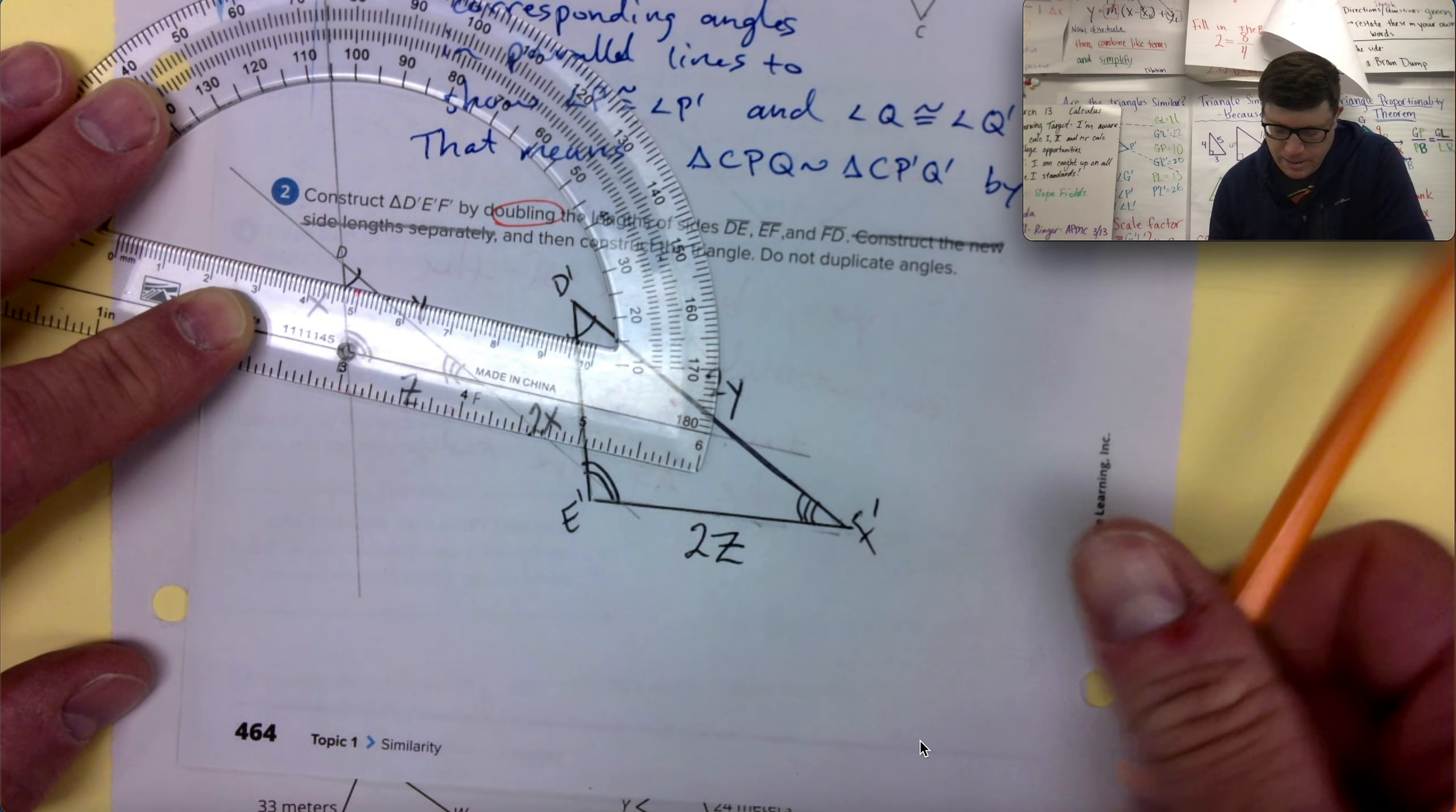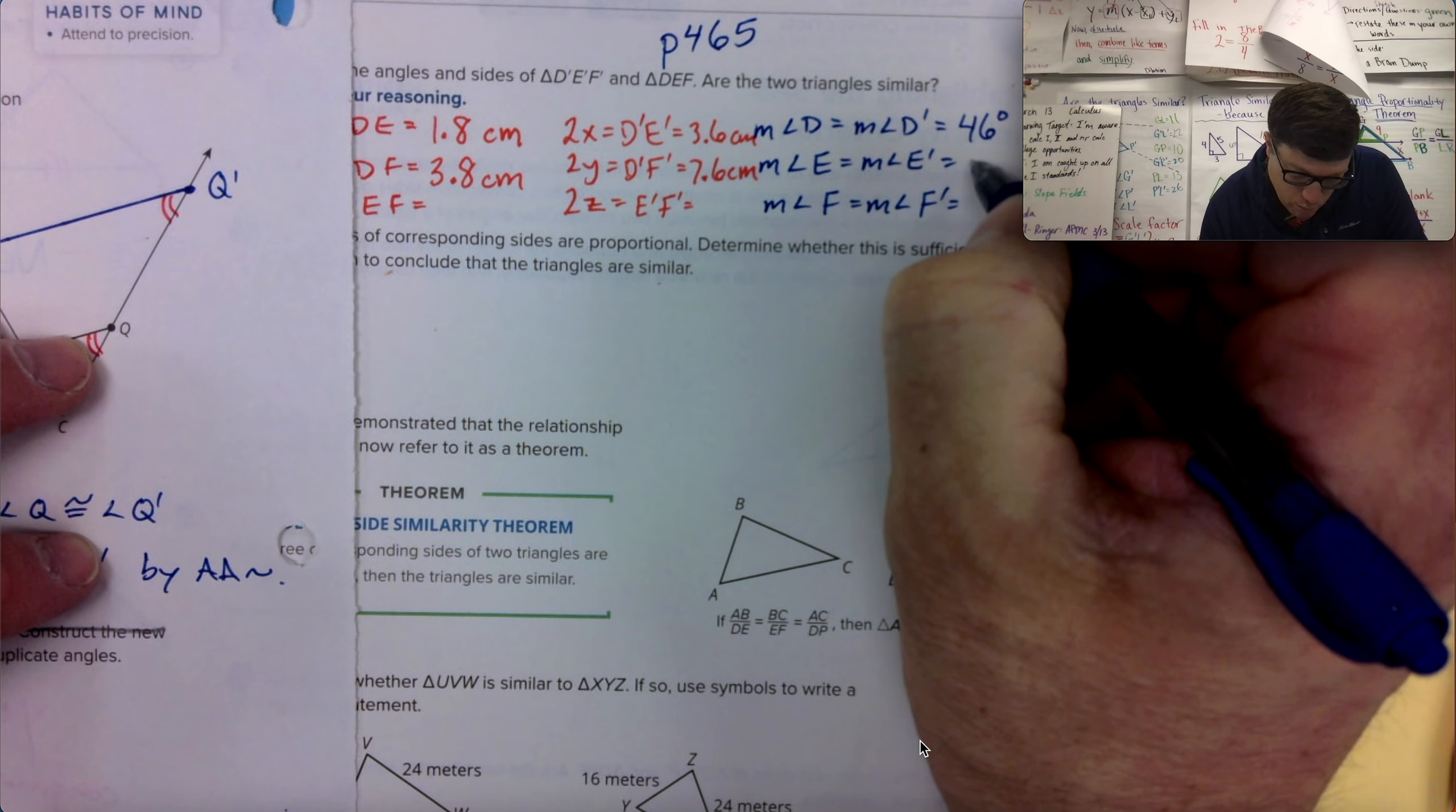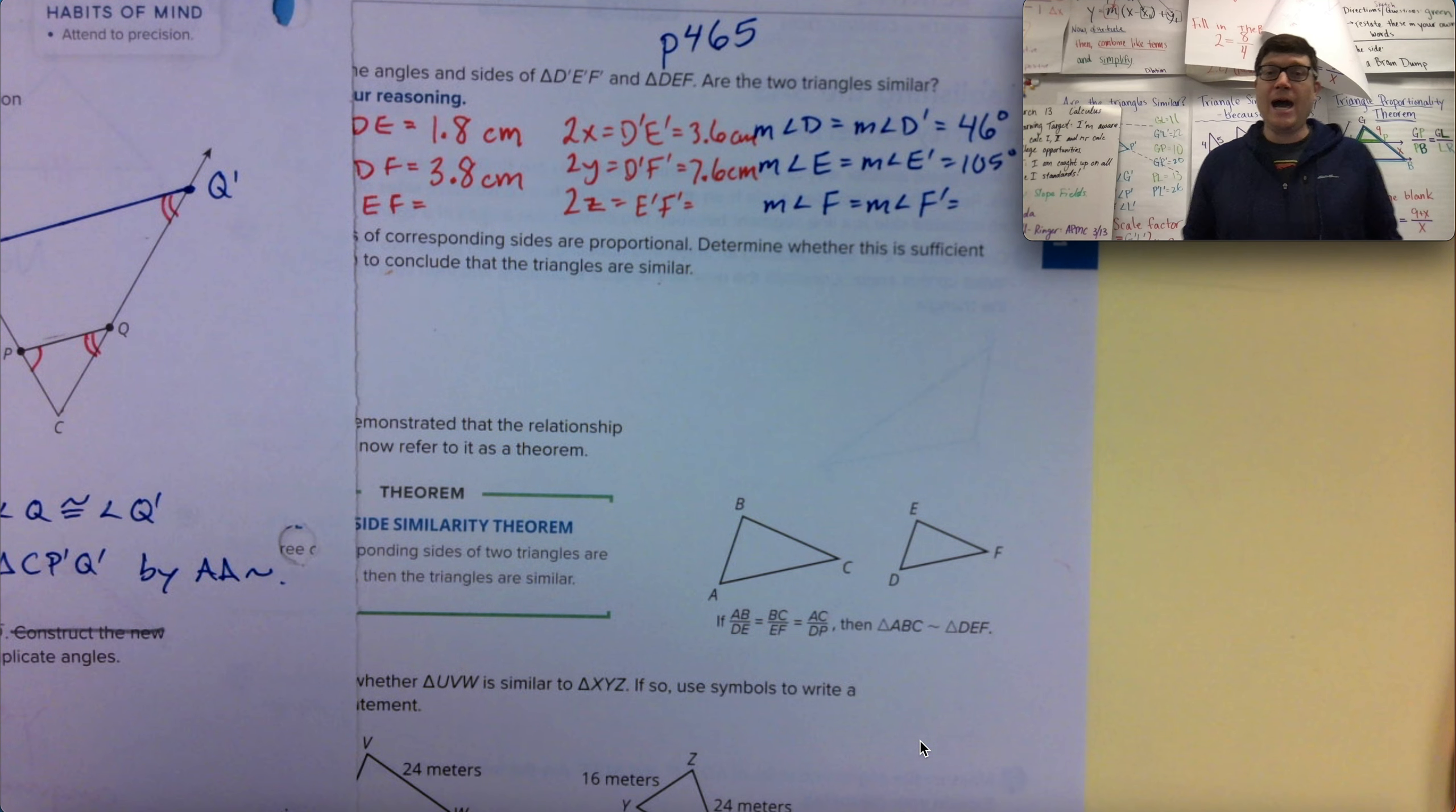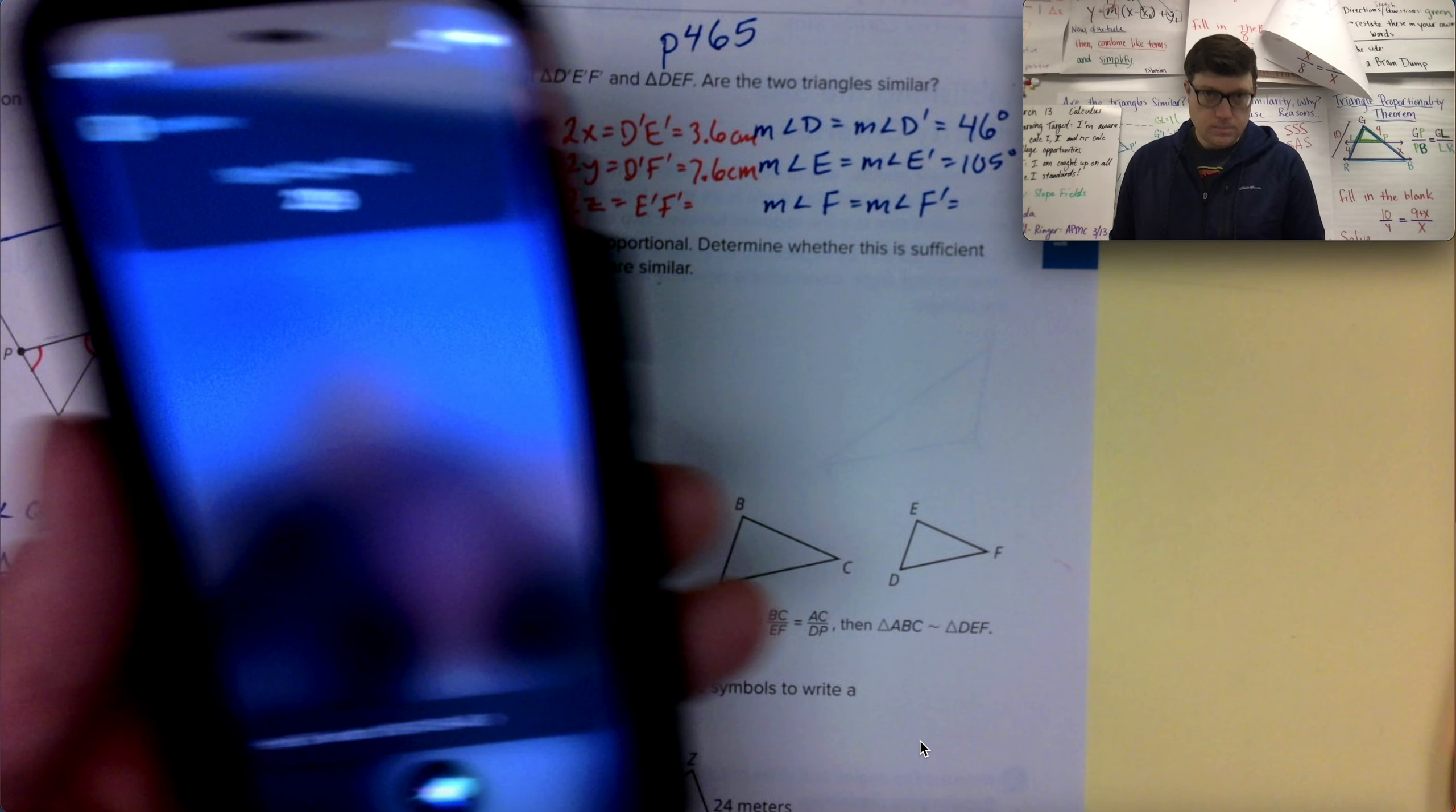It's about 105, maybe 106 if I'm being a little bit picky. But I'm going to go back to page 465 and I'm going to write down that angle E is a 105 degree angle. Now, one of the facts about triangles is that all three angles in a triangle on a flat surface add up to 180 degrees. So if I do, hey Siri, what's 180 minus 105 minus 46? The answer is 29.